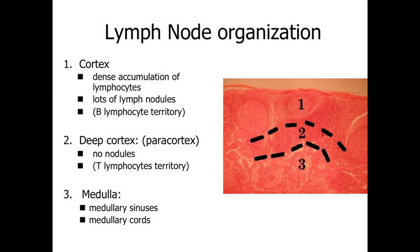Looking at the organization of the lymph node, we have the capsule around the outside, and then underneath that we have a cortex. Within the cortex, it's going to be very basophilic staining because we have a very dense accumulation of small lymphocytes. We're also going to find lots of lymph nodules in this region — both primary and secondary lymph nodules. Secondary lymph nodules are activating regions of activated lymphocytes with a germinal center. In general, the cortex is going to be B lymphocyte territory, because we have these lymph nodules, which we know are going to be B lymphocytes — the ones that are able to produce antibodies.